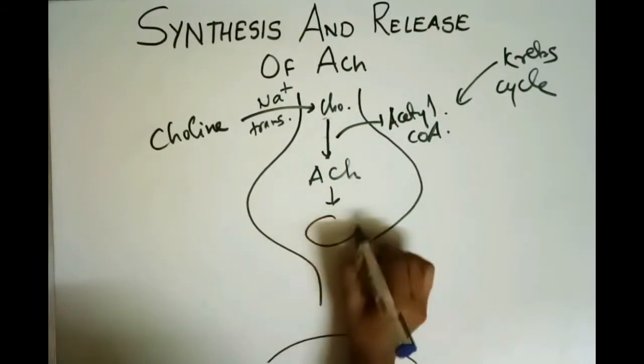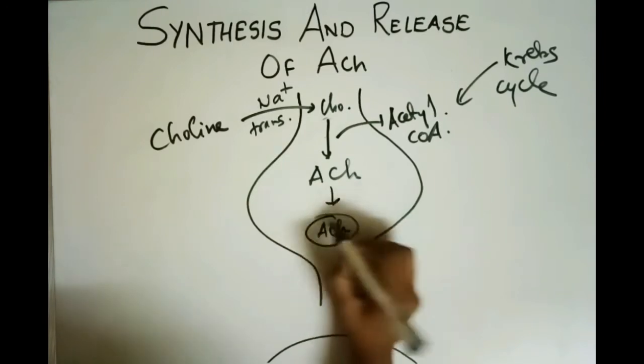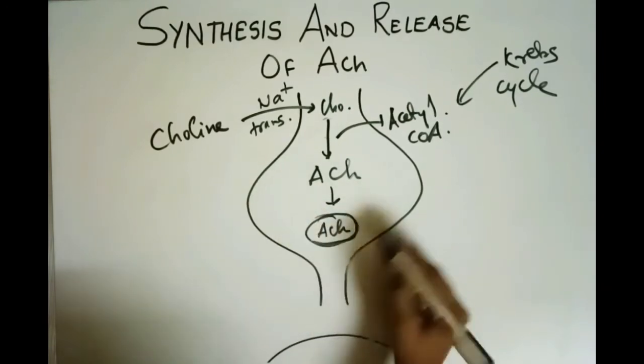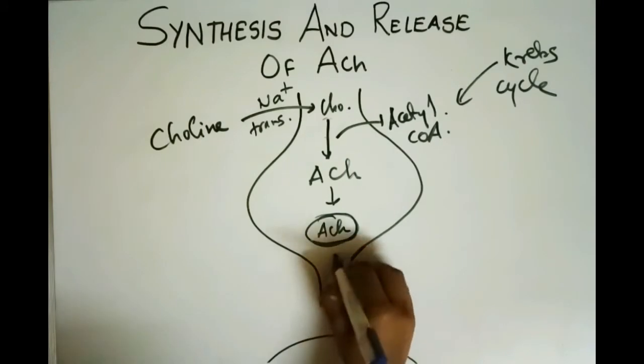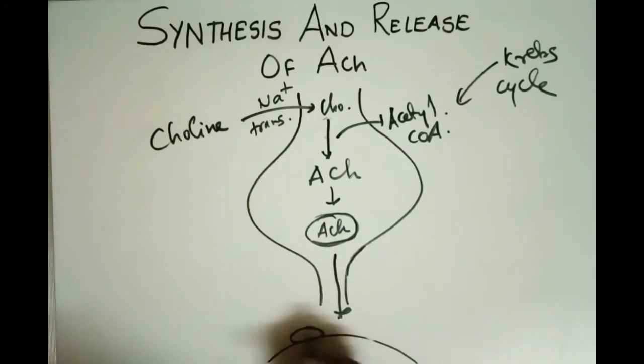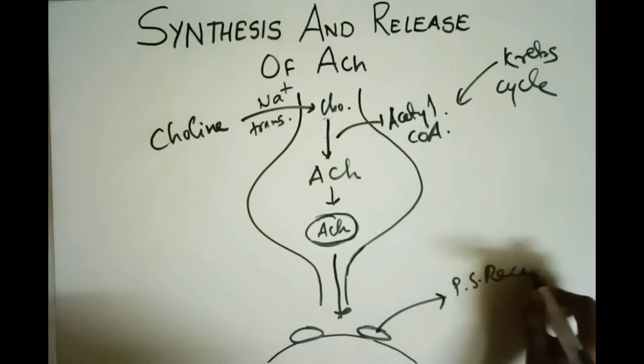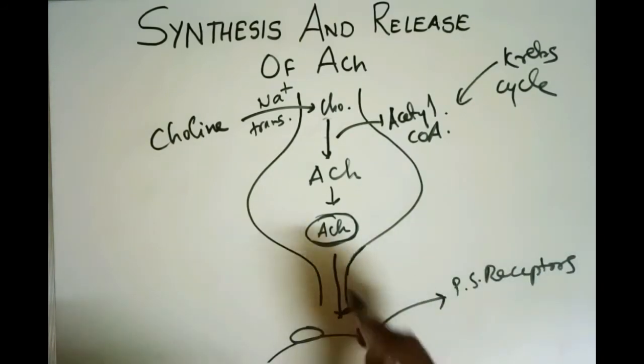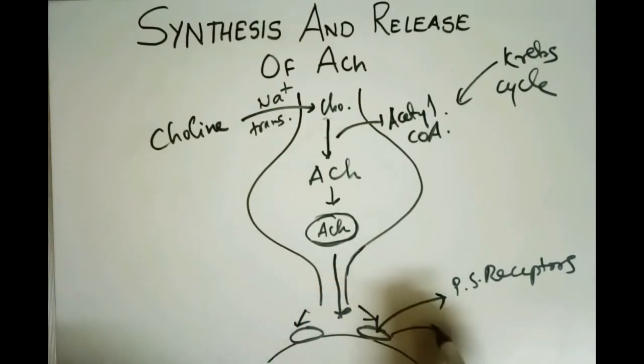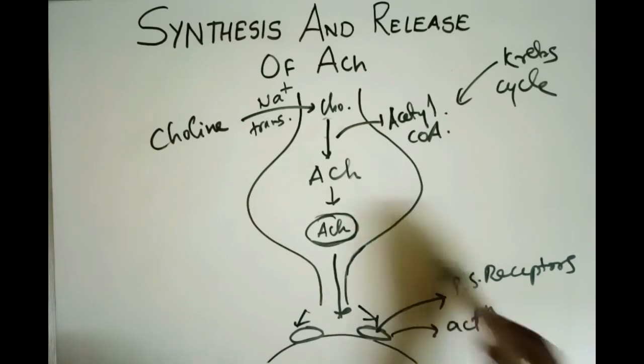Acetylcholine is stored in the synaptic vesicles. This acetylcholine is released to the postsynaptic receptors. The acetylcholine will bind to the postsynaptic receptors and we will get the required action.